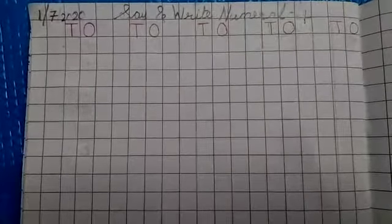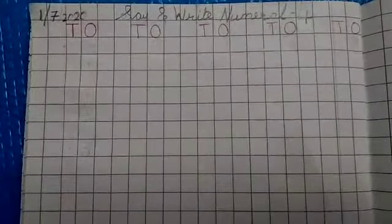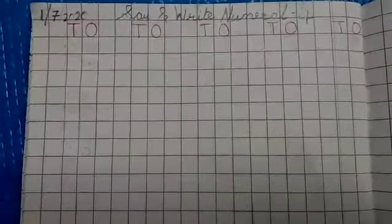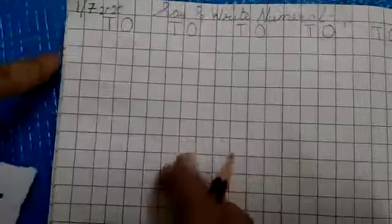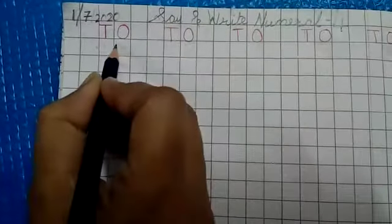Now we will see how to write number 4 in the book. This is your maths book. You have to write number 4 in this book. Which number is this? Number 4. We will start writing.